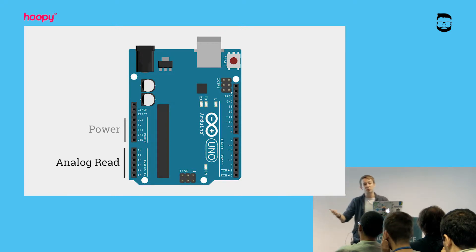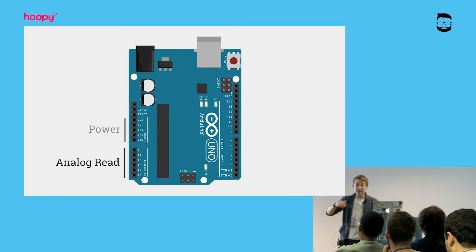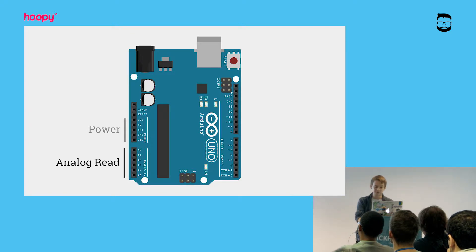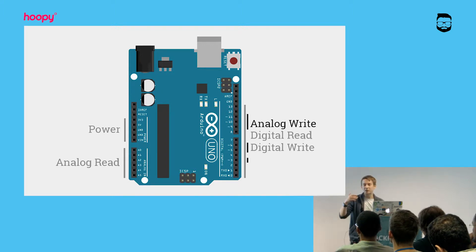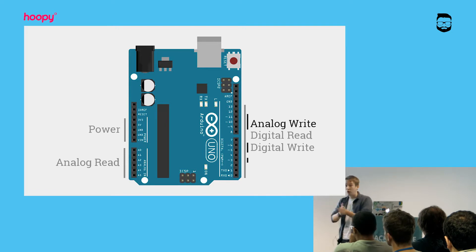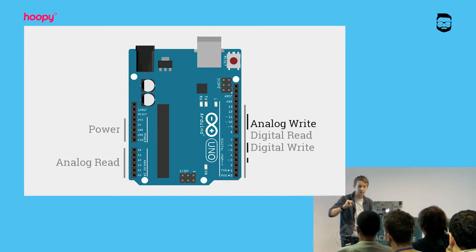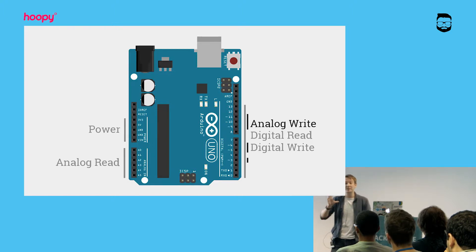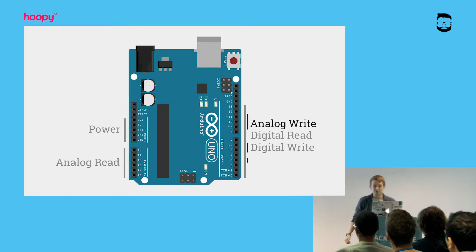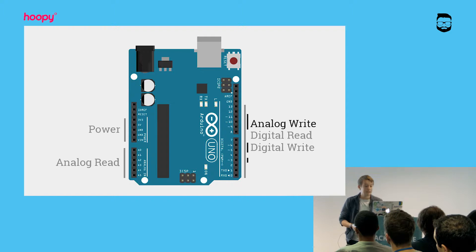On the other side we've got digital read and write pins, which let you read and write constant on/off values. Some of these can also do analog output using PWM — pulse width modulation — which means they switch extremely quickly from high to low to simulate a value in between. That lets you control things like motors at varying speeds. So between analog read, digital read/write, and PWM, you have a good range of ways to interact with components.